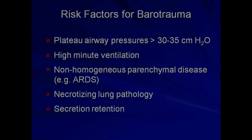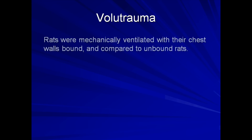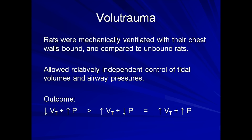Even when alveolar rupture doesn't occur, excessive regional volumes are believed to be damaging to the lung parenchyma, even in the absence of excessive airway pressures. The first significant evidence that ventilator-associated lung injury had mechanisms aside from gross barotrauma came in the 1980s, when researchers conducted rat experiments in which rats were mechanically ventilated with their chest walls bound. This allowed relatively independent control of tidal volumes and airway pressures. The outcome was that rats with lower tidal volumes and high airway pressures developed less lung injury than those with high tidal volumes, irrespective of their airway pressures. Thus the conclusion that it was actually the high tidal volumes that were the problem.